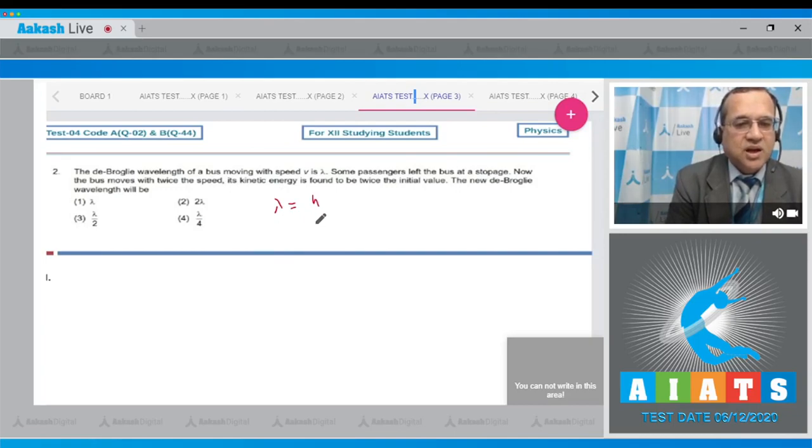Dear students, we know that the de Broglie wavelength lambda is equal to H upon P, and in relation with the kinetic energy, H upon square root of 2M times kinetic energy E. Now in the second case, when some passengers leave the bus, the kinetic energy is found to be twice, so kinetic energy in the second case equals two times the first kinetic energy.